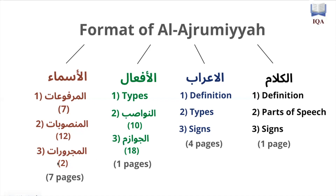This is actually the longest part of the book — it's seven pages, contrary to al-afa'al which is one page, al-i'rab which is four pages, and al-kalam which is just one page. So this is going to be the longest section of the matan, though maybe a bit less complicated than al-i'rab even though it takes more pages, because al-i'rab is a bit more complex.